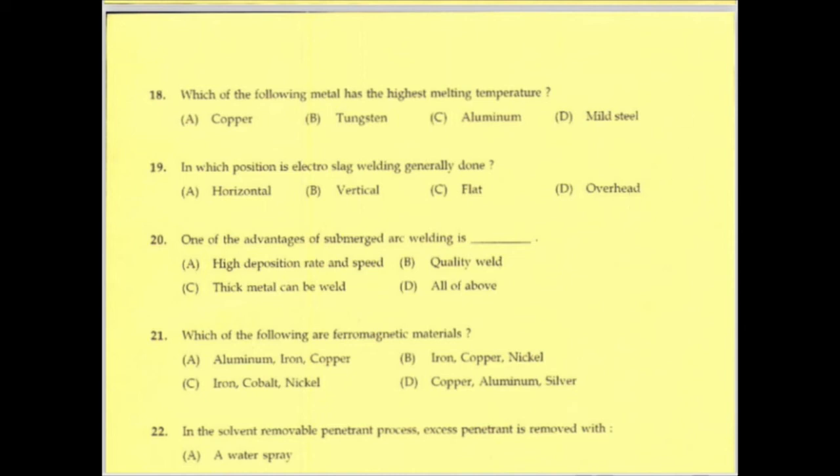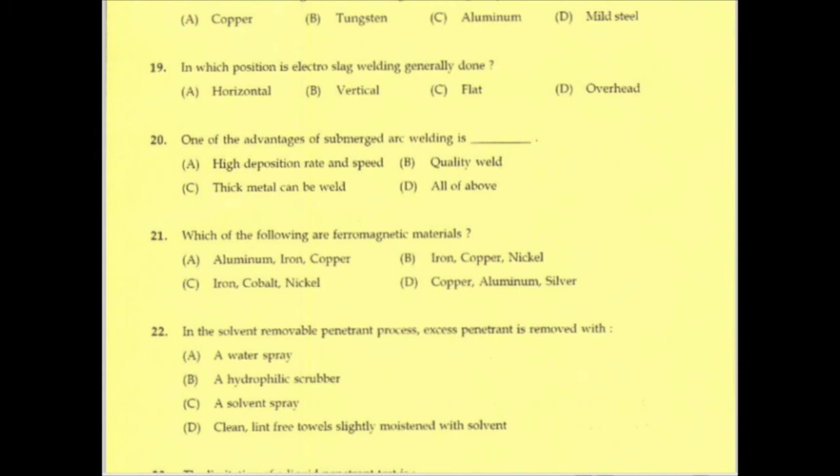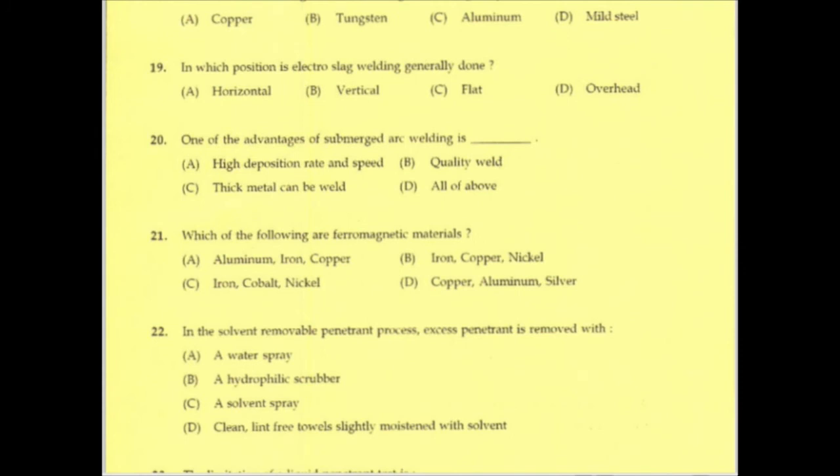Which of the following metals has the highest melting temperature? Out of the options, tungsten has the highest melting temperature.